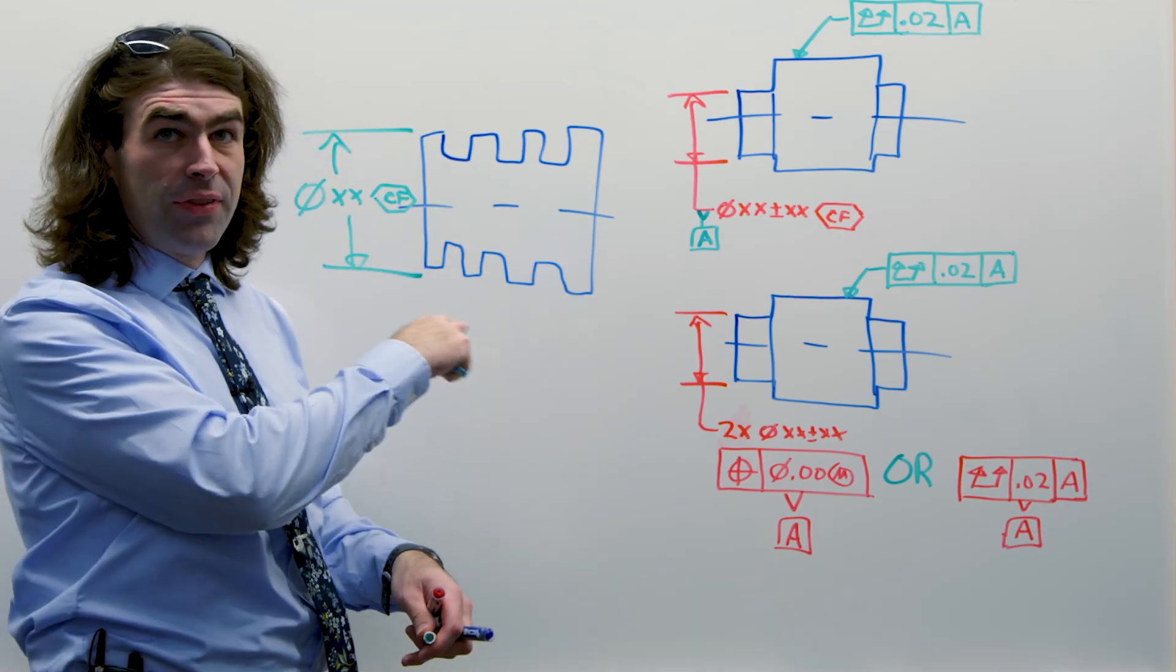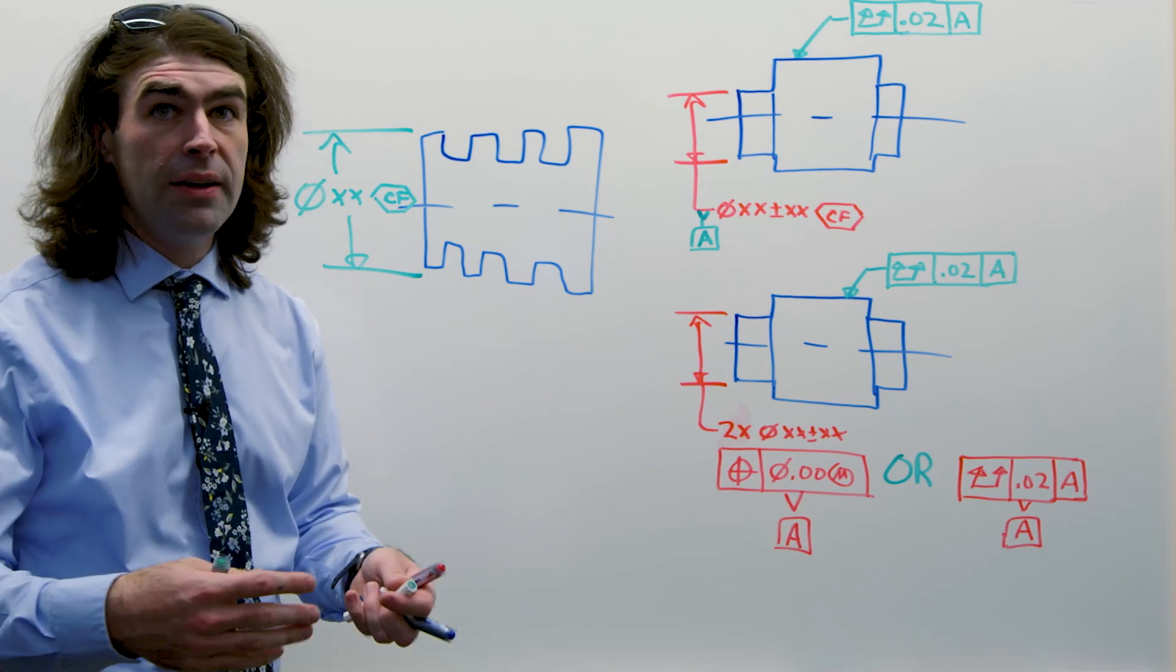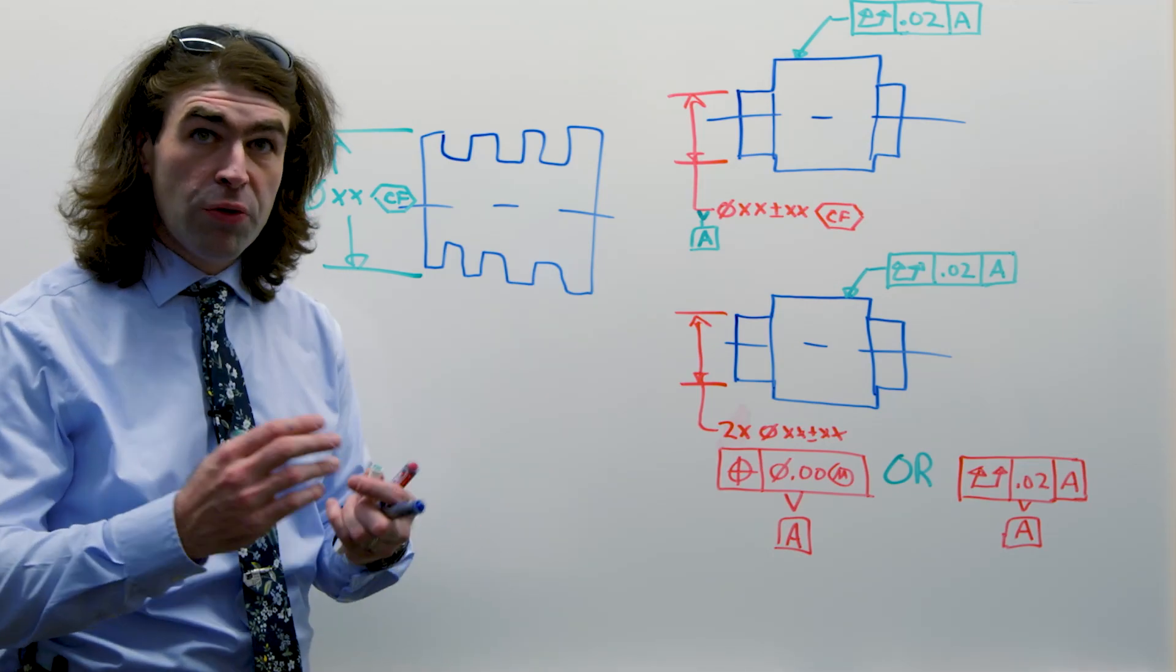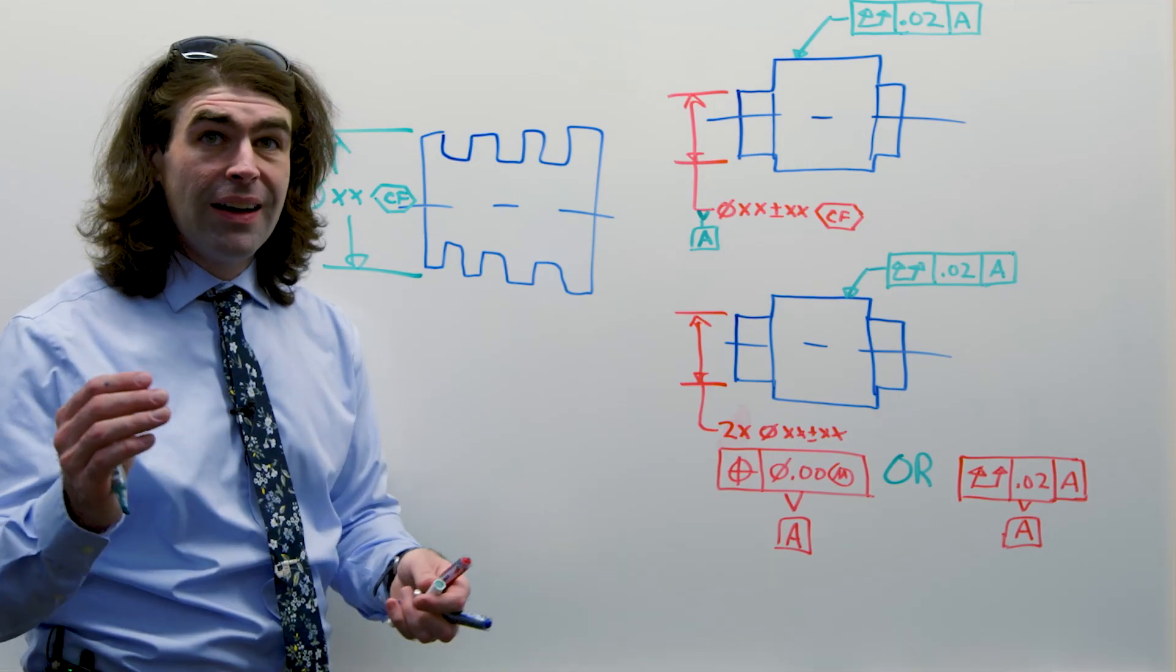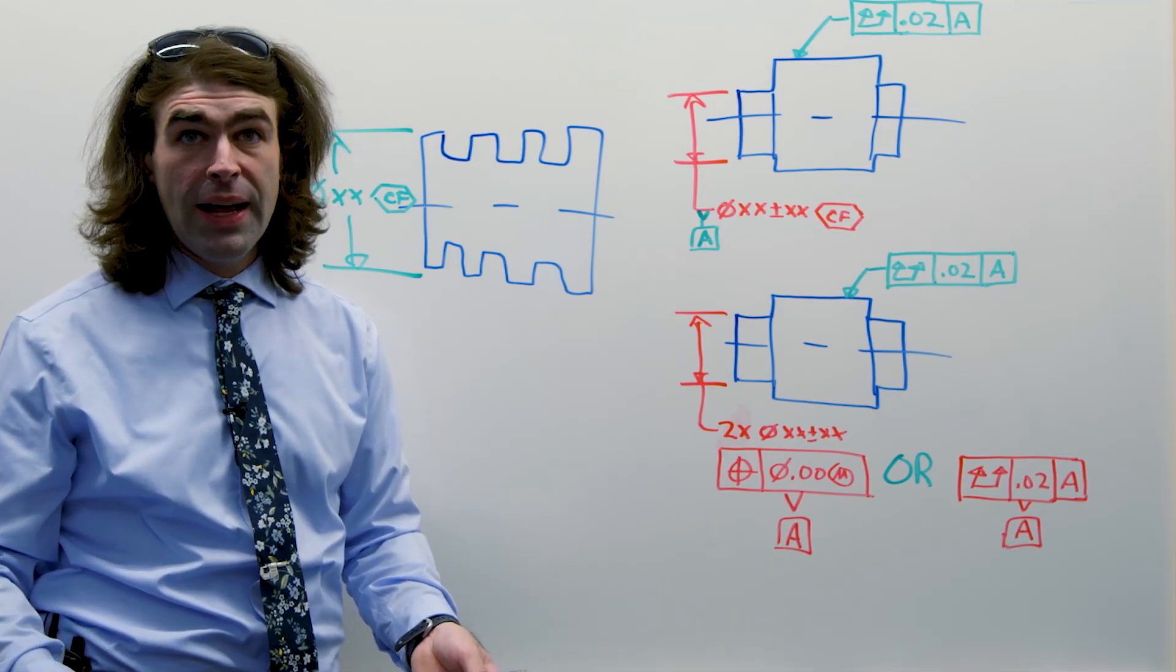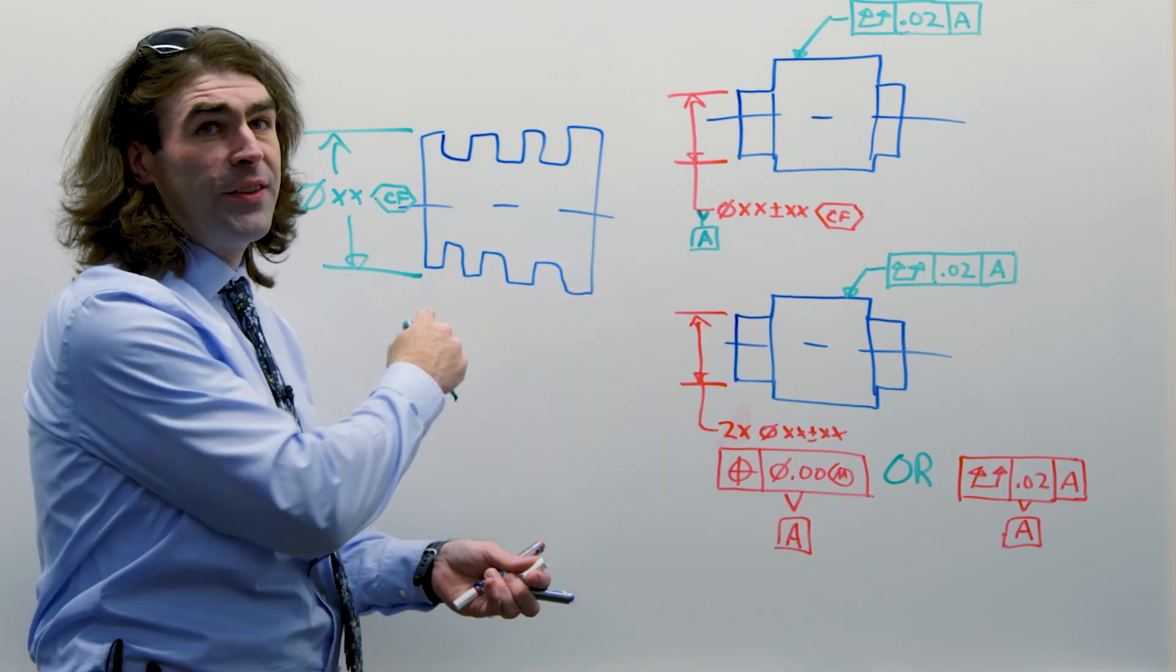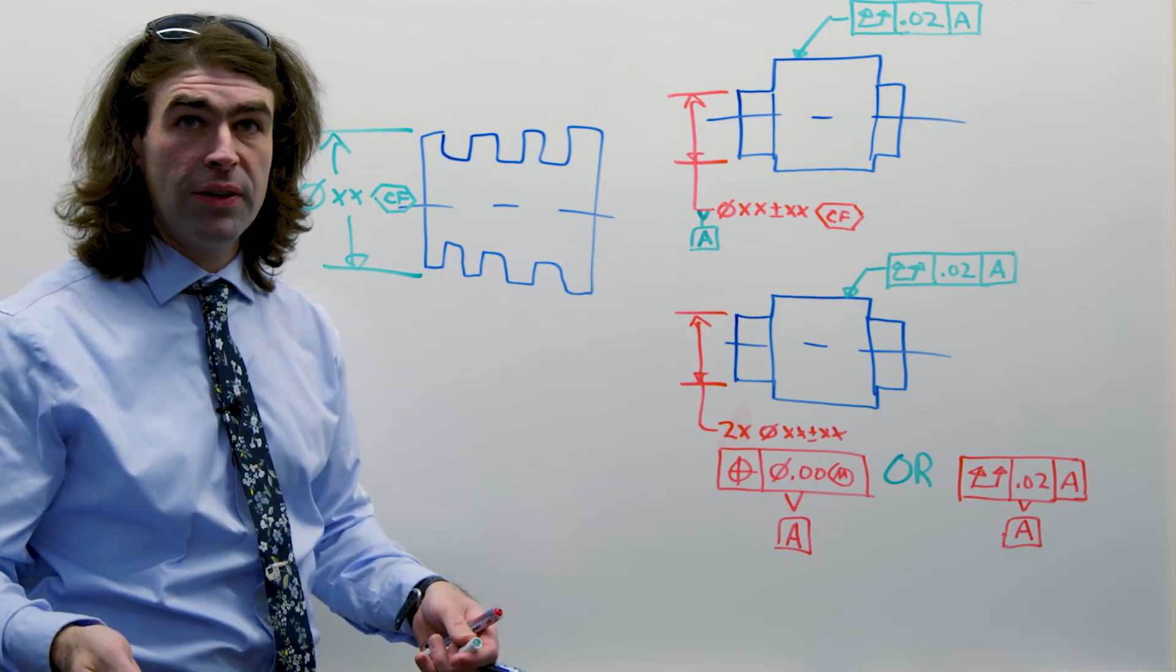Because when you check it, however you're going to do it, you're treating it as a cylinder, almost like you treat the major diameter of an external thread as a cylinder. It's just going to be however you hold it touching those outside portions.